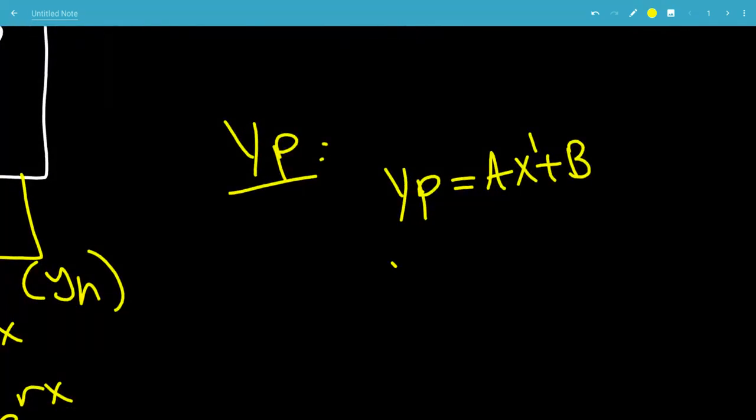You can differentiate that twice to get that y double prime of p is 0, because y prime of p would be a, and then the derivative again, you get 0.